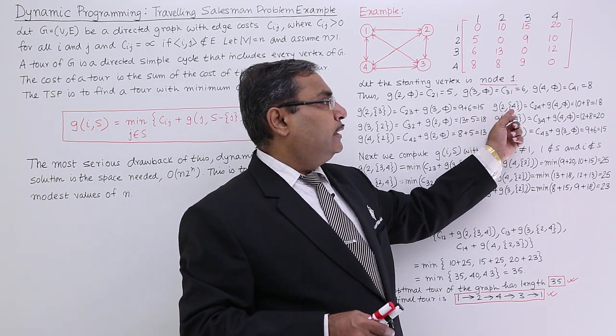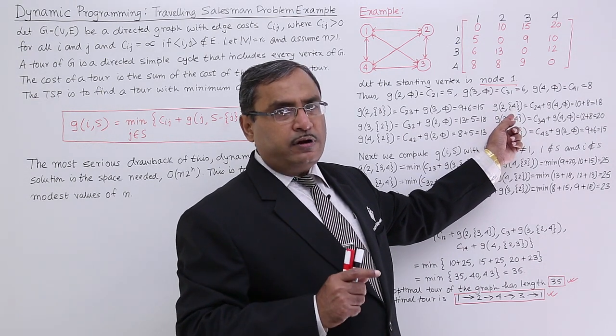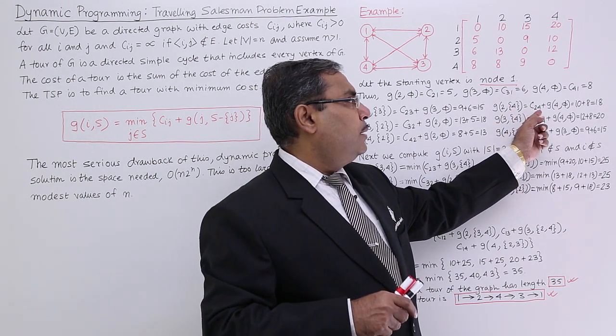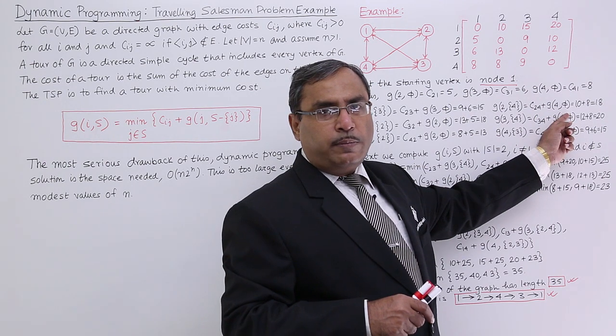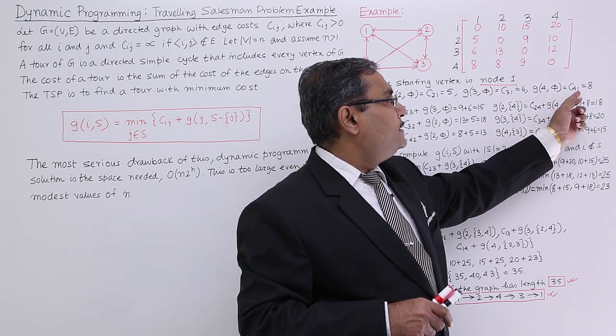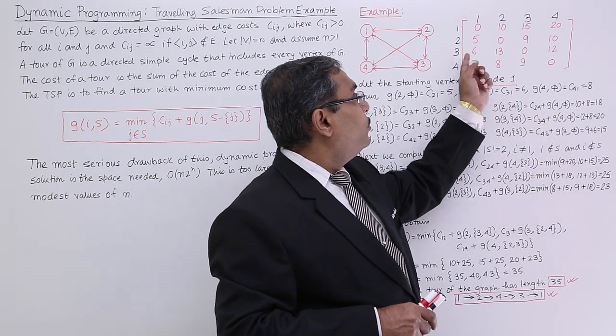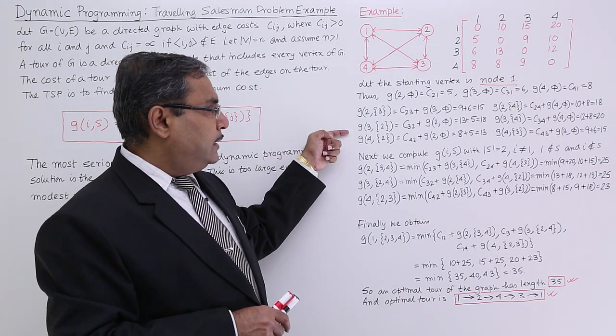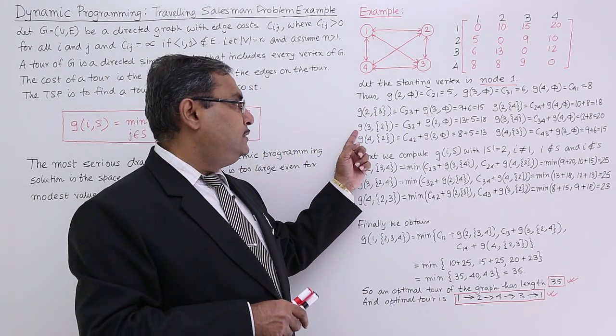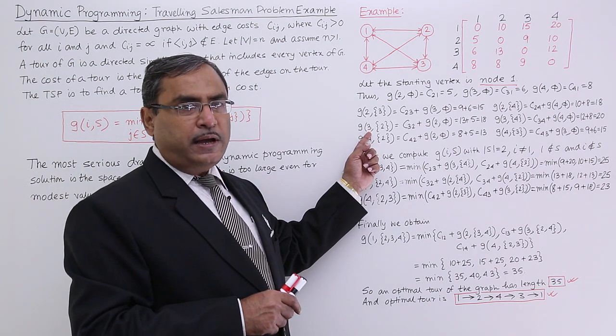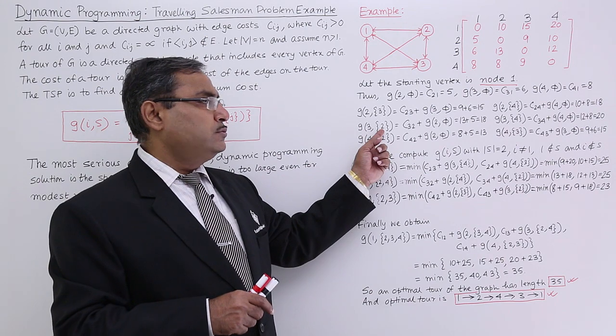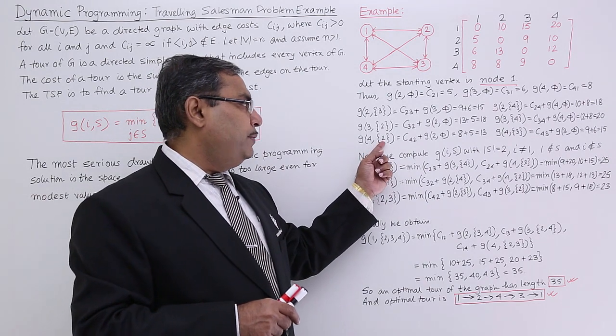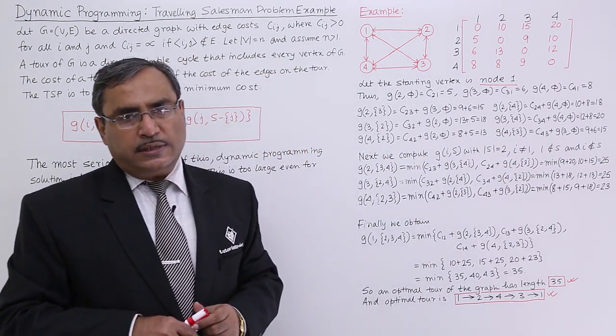Now if I am at node number 2 and the remaining untraversed node is 4, I shall go to node number 4 and then 4 back to node number 1. G(4,φ) is equal to 8, so 8 will be coming and C24, 10 will be coming. In this way, I did the calculation 18 and in the similar way, I did the calculation for the others. If the traveling salesman is at node number 4, the remaining node can be 2 or 3. In this way, the calculations have been made.